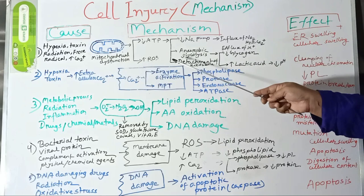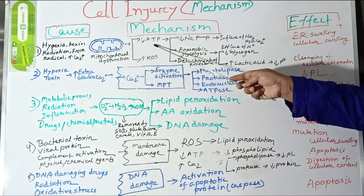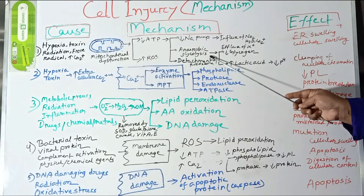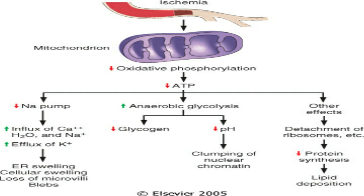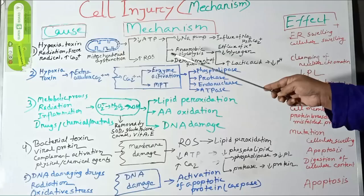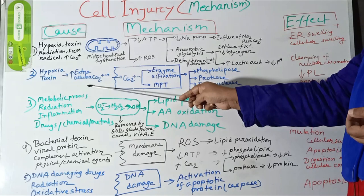ATP is also required for cellular protein synthesis. Due to decreased ATP synthesis, ribosomes are detached from the rough endoplasmic reticulum so that cellular protein synthesis is interrupted. These are all the deleterious effects of decreased ATP synthesis and mitochondrial dysfunction within the cell.